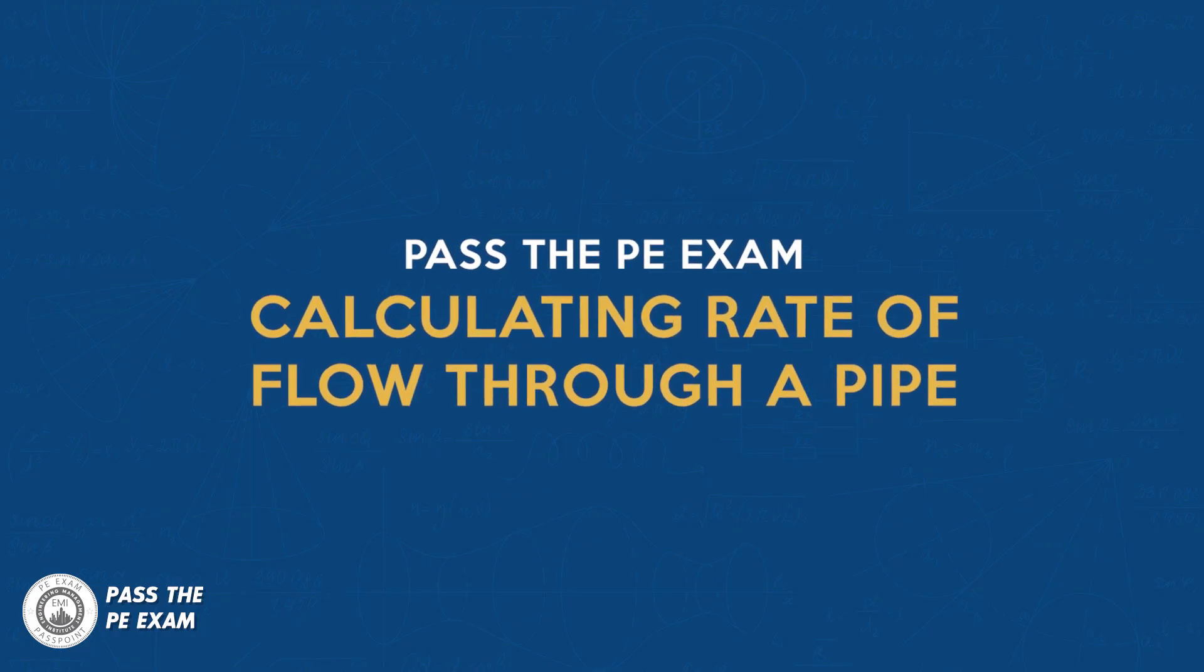Hello, Anthony Fasano here from Pass the PE Exam. In this video, we will be using the Hazen Williams equation and its derivatives provided in the PE Exam Handbook to calculate the flow rate within a run of cast iron pipe.